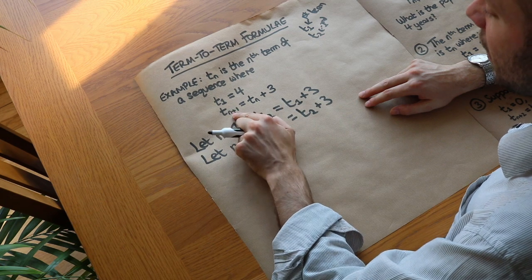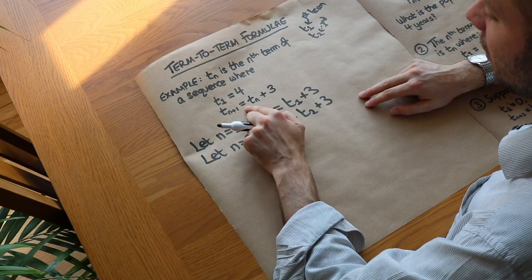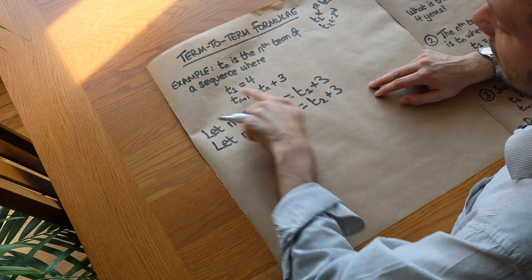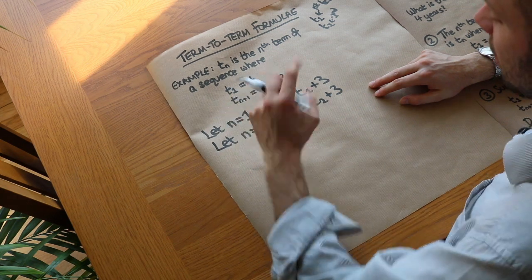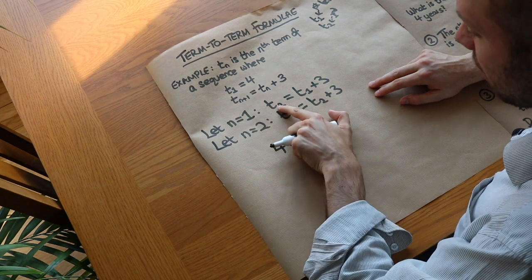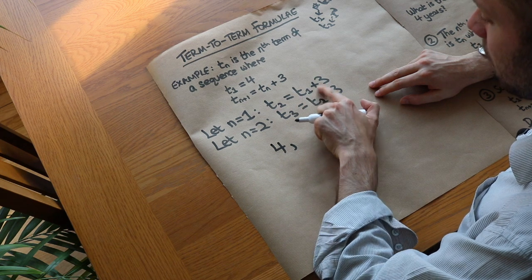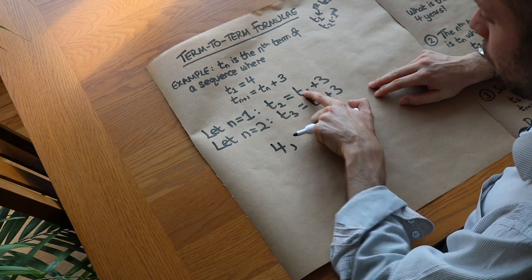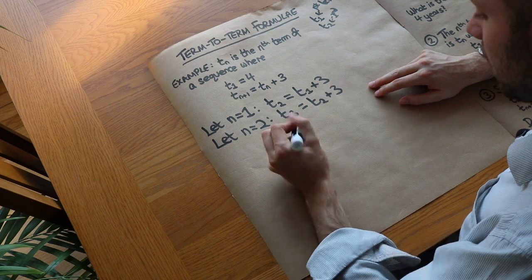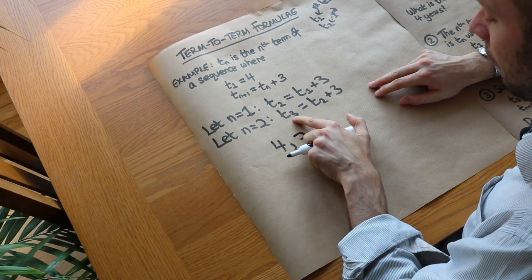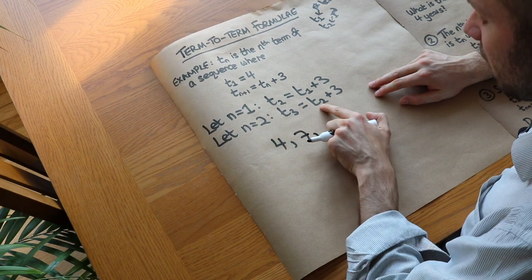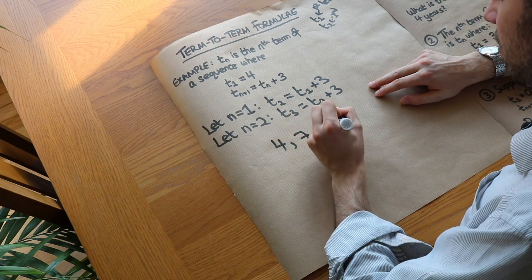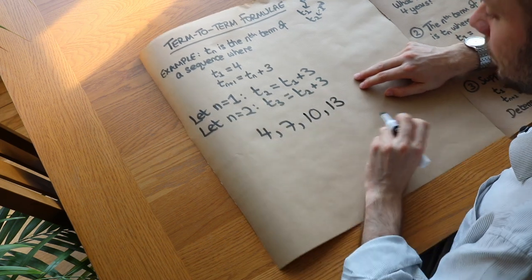It's basically saying the next term of the sequence is the previous term plus 3. So in this particular case, if the first term is 4, the second term is the first term plus 3 — T2 is 4 plus 3, which is 7. Then the third term is the second term plus 3: 7 plus 3. You can see it's adding 3 each time.